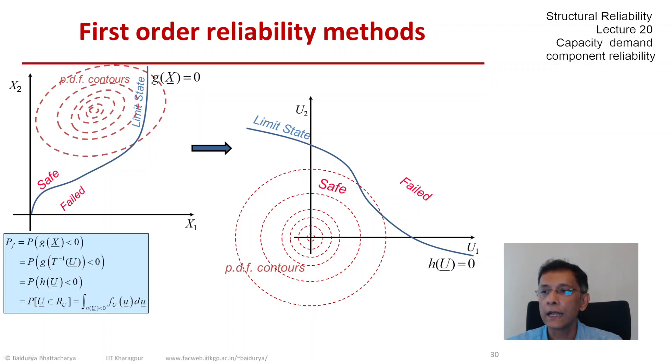This is what happens to the probability of failure. Now we are interested to find the probability content in the region defined by R_u, the failed region that you clearly see on the right side of your screen. And that is now a joint normal probability.